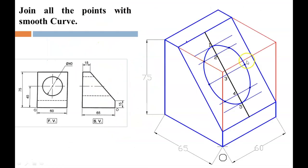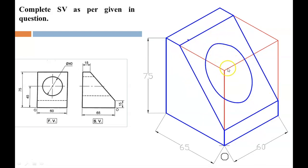Now join all the points with a smooth curve using a French curve. This gives you the isometric view of a circle on the non-isometric plane. Then remove all unnecessary edges to get the perfect shape of the object.